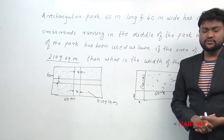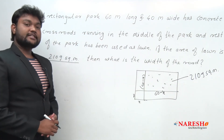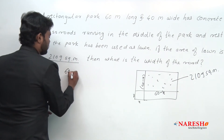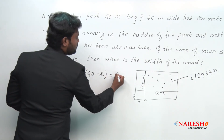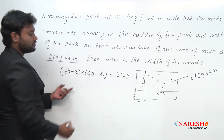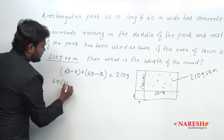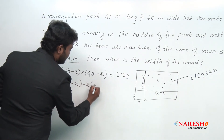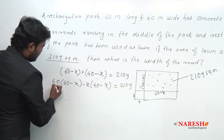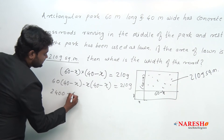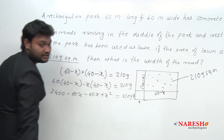So this is a simple solution. The area of rectangle is length into width, so length is 60 minus x and width is 40 minus x, which equals the total lawn area 2109. Solving this: 60 into (40 minus x) minus x into (40 minus x) equals 2109, giving us 2400 minus 60x minus 40x plus x² equals 2109.